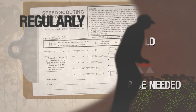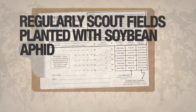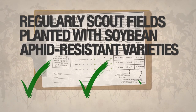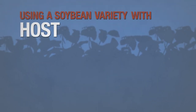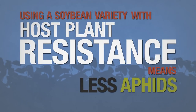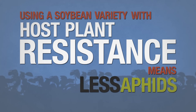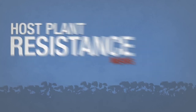Farmers should regularly scout fields planted with soybean aphid-resistant varieties. But simply put, using a soybean variety with host plant resistance means fewer aphids on your plants, less need for pesticides, and ultimately yield protection.